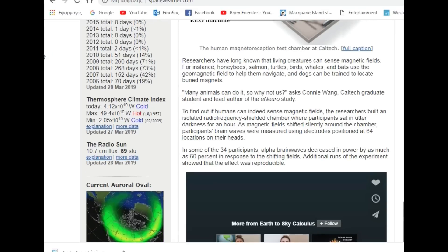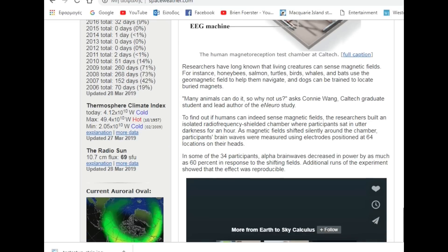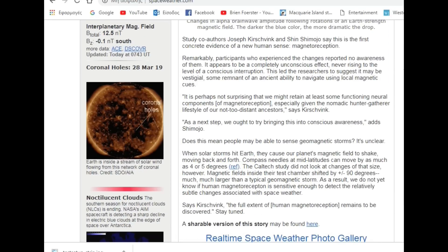Now, to find out, this is nothing new. I mean, the videos that I posted were done about, I think, 10, 12 years ago. They came up with this conclusion. Okay, let's go back to what Connie Wang did at Caltech. To find out if humans can indeed sense magnetic fields, the researchers built an isolated radio frequency shielded chamber where the participants sat in utter darkness for an hour. As magnetic fields shifted silently around the chamber, participants' brainwaves were measured using electrodes positioned at 64 locations on their heads. So this is it here, the EEG regime. In some of the 34 participants, alpha brainwaves decreased in power by as much as 60% in response to the shifting fields. Additional runs of the experiment showed that the effect was reproducible. The study co-authors, Joseph Kirchvink and Shin Shimojo, say that this is the first time concrete evidence of the new human sense magnetoreception.